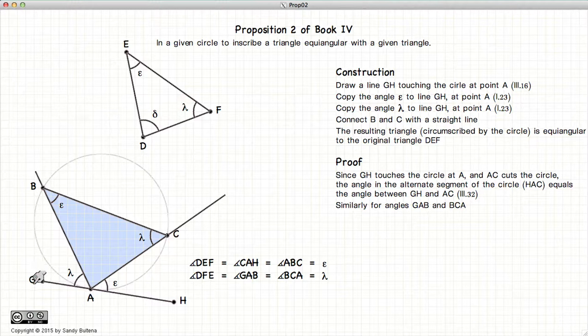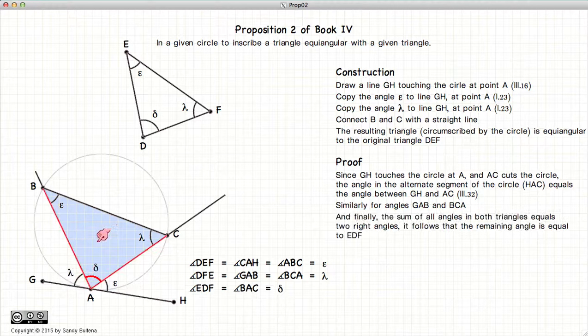Now we also know that on a straight line, the sum of the angles is also equal to two right angles. So if that's equal to two right angles, and the sum of these are equal to two right angles, this means that this angle here is also equal to delta, since epsilon plus lambda plus delta equals two right angles.